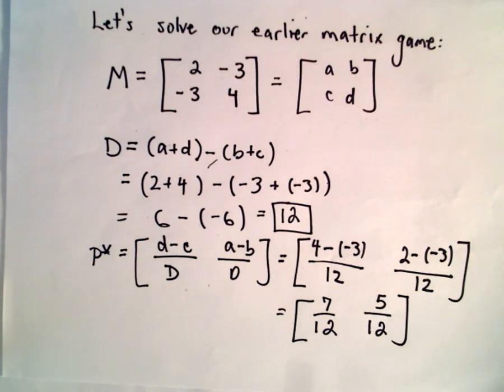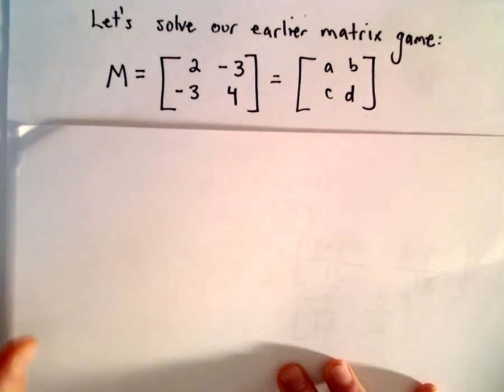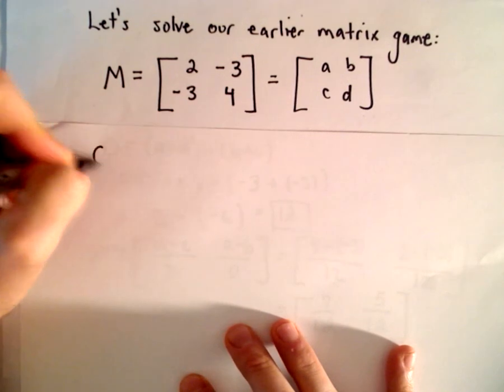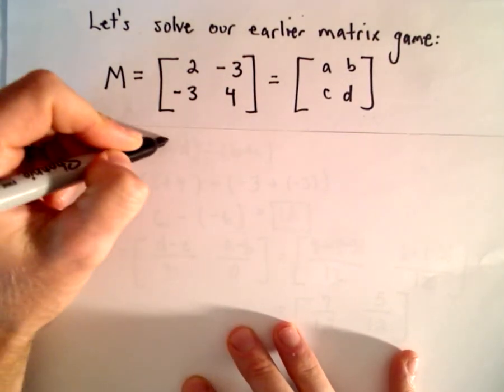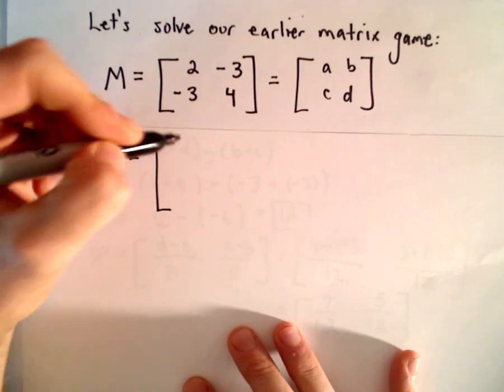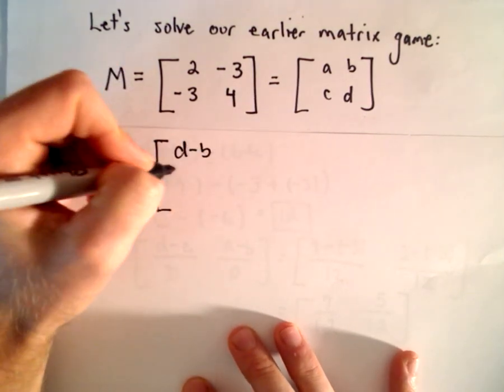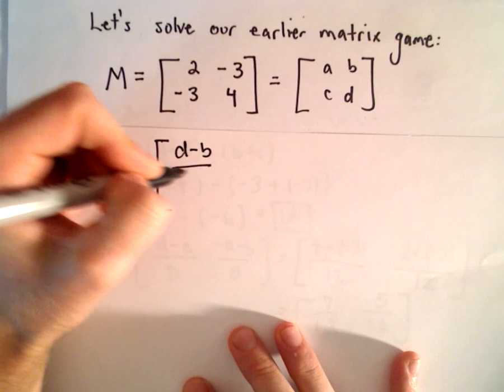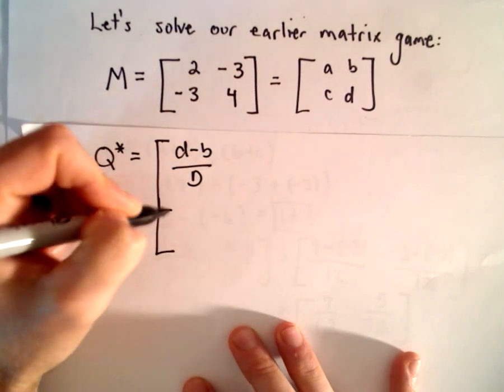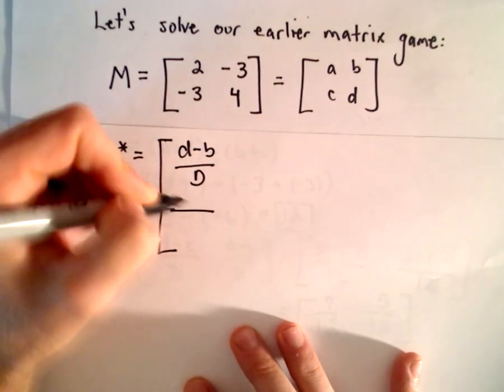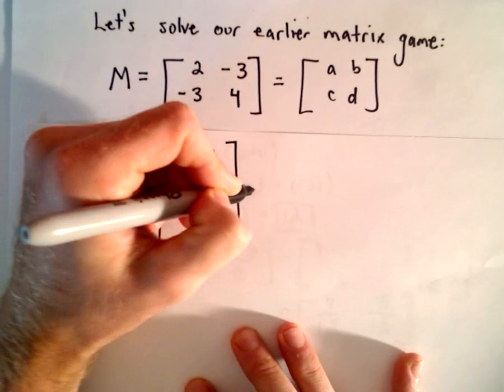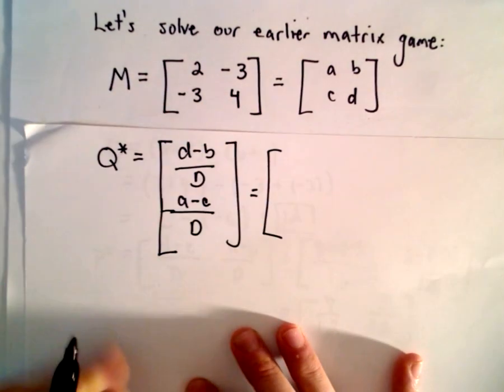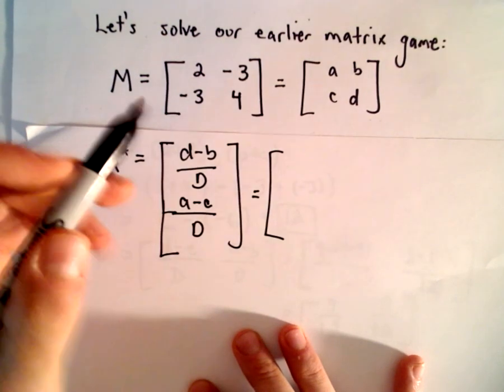And likewise, we can compute the probability for the strategies associated with Q star. So the formula there was D minus B over capital D, and then we've got A minus C over capital D. So it's just a matter of substituting in values.